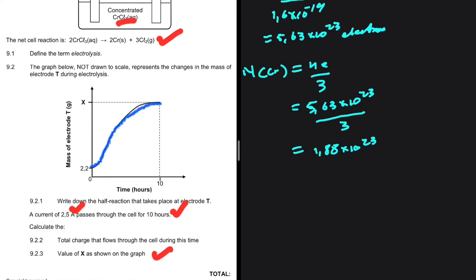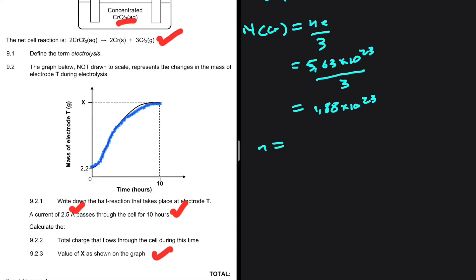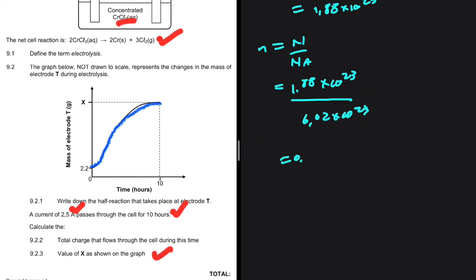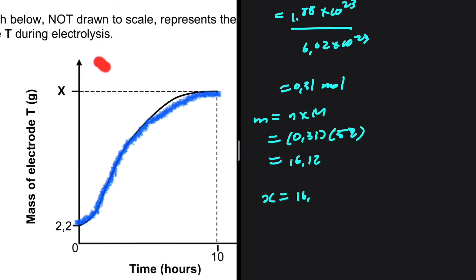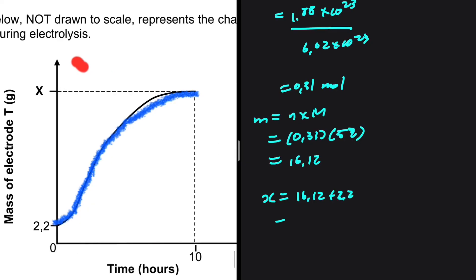Now, we can use the number of atoms of chromium to find the number of moles of chromium. The number of moles is equal to the number of atoms divided by Avogadro's number. This will give us 1.88 times 10 to the power of 23, everything divided by 6.02 times 10 to the power of 23. This is equal to 0.31 moles. So, we have the number of moles. We can go ahead and find the mass. The mass will be given by the number of moles multiplied by the molar mass. 0.31 multiplied by 52. That is the molar mass of chromium. If you put that in your calculator, you'll get 16.12. X is just equals to 16.12 plus 2.2. This will give us 18.32 grams.